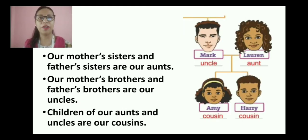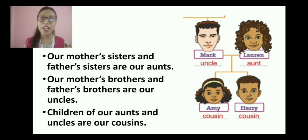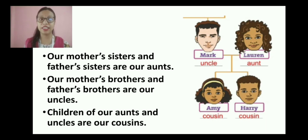Then we have our aunt and uncle. Who are they? It can be your mother's sister or your father's sister — from both sides, we call them aunt. Mother's brothers are also called uncle and our father's brothers are also called uncle — from both sides, we call them aunt and uncle. The children of our aunt and uncles are called our cousins — we call cousins to the children of our aunt and uncle, not to the children of our own mother and father.